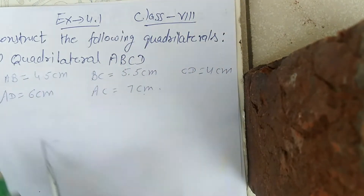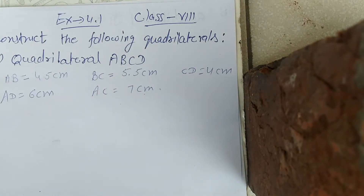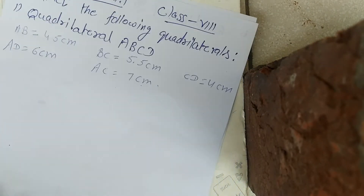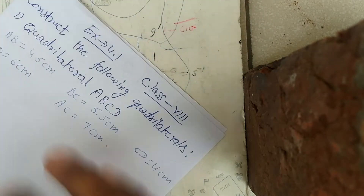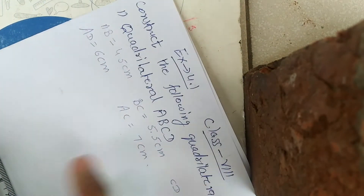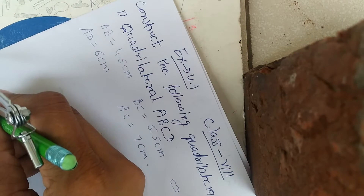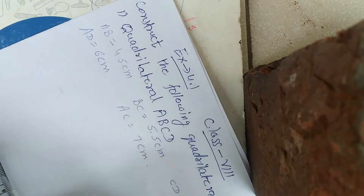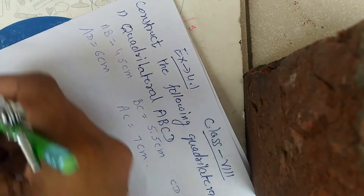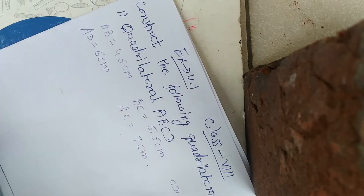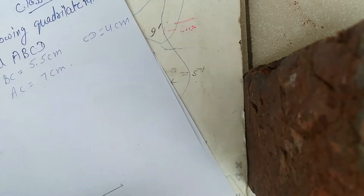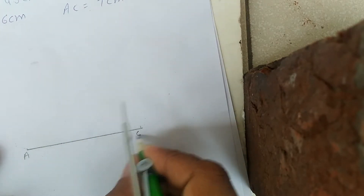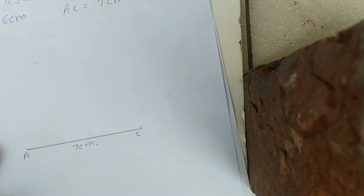In se humne quadrilateral ABCD banana hai. Sabse pehle hum AC lete hain. AC kitna hamara — 7 cm. We take AC = 7 cm. Humne ye 7 cm ka AC liya. A, C = 7 cm.